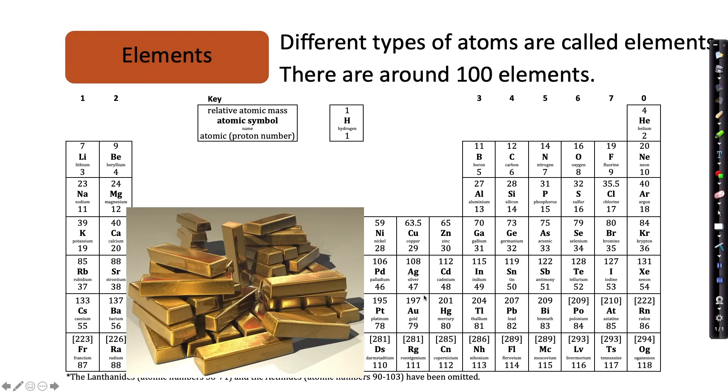Gold is an example of an element. If you were to pick up one bar of gold, it would be only made up of one type of atom. It could be found here in the periodic table.